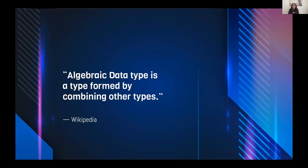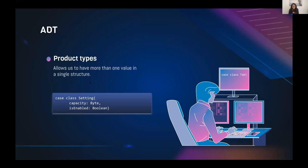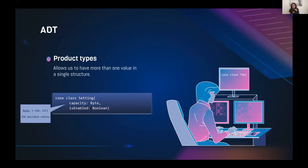We can also have types that combine other types — these are called algebraic data types. We can use a case class to combine types in a single structure. For example, a 'Setting' case class has a 'capacity' field and an 'isEnabled' field. When we encounter a 'Setting' in our program, we expect it to have both of these fields.